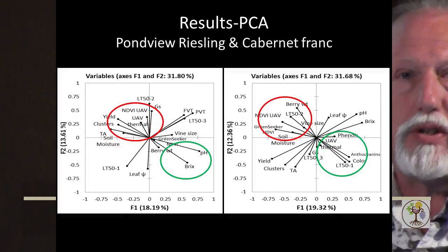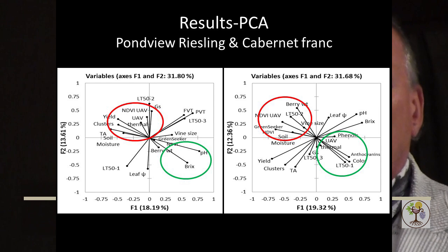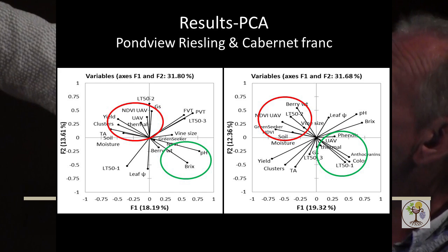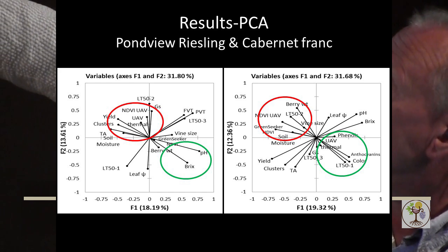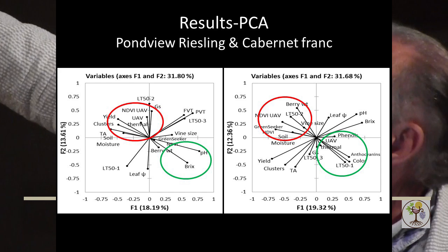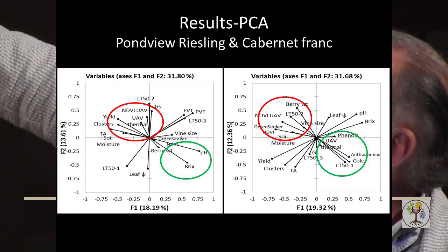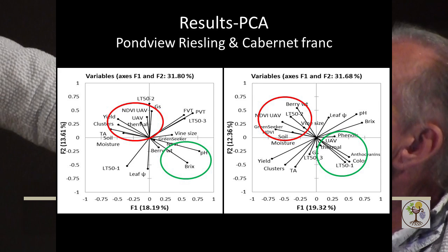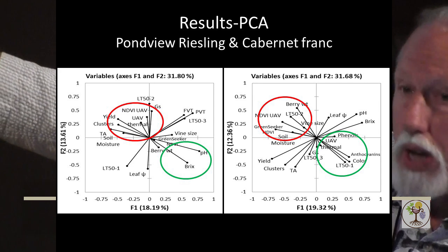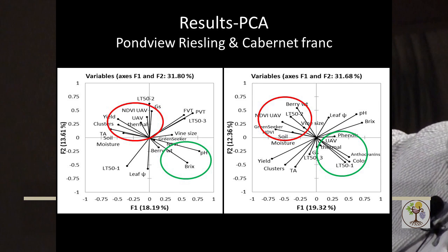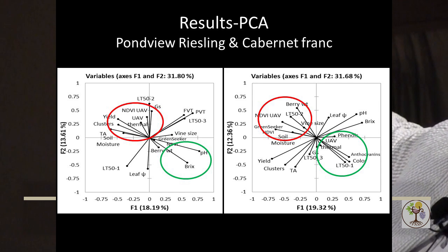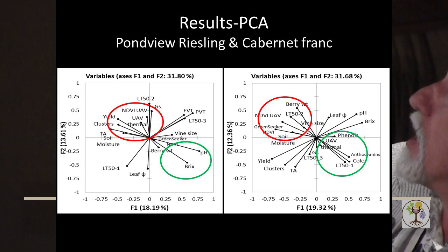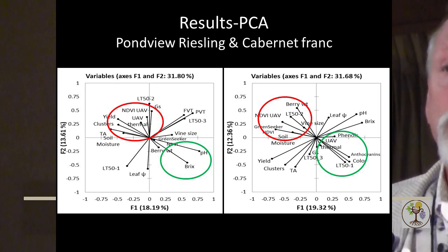This next vineyard is a little bit further back from the lake, with heavier clay. It's VSP trained. Looking at the red zone here, we have UAV and naturally we're going to get some relationships with Green Seeker and yield components, and to a lesser extent soil moisture and some berry composition. Over here, similar with Cabernet Franc — Green Seeker, berry weight, vine size, soil moisture — and down here, anthocyanins, color, and phenols.